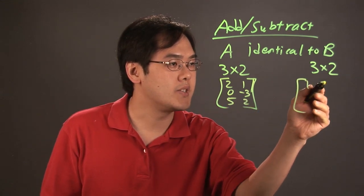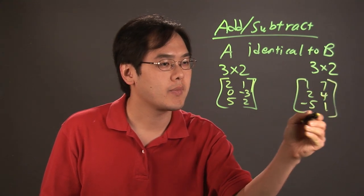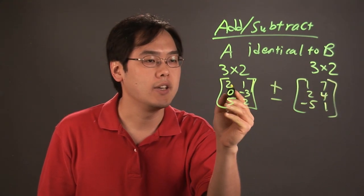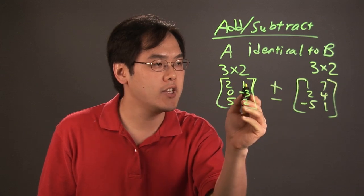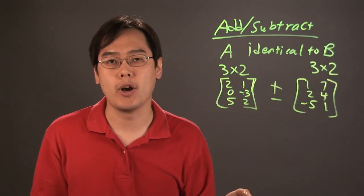and then you have 1, 7, 2, 4, negative 5, 1. Whether you're adding or subtracting, you add the corresponding entries, like 1 and 7, 0 and 2, negative 3 and 4, and keep on going.